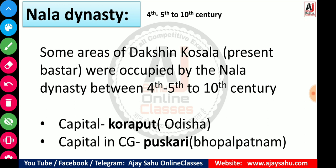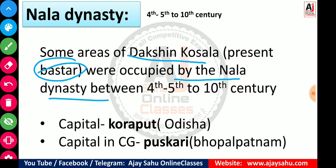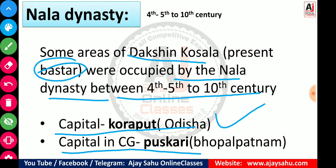Next, we move to the Nal dynasty, which is very, very important. Its duration was from the 4th–5th century to the 10th century. Some areas of Dakshin Koshla — present-day Bastar — were occupied by the Nal dynasty. The capital is considered to be Pushkari, also known as present-day Bhopal Patnam.